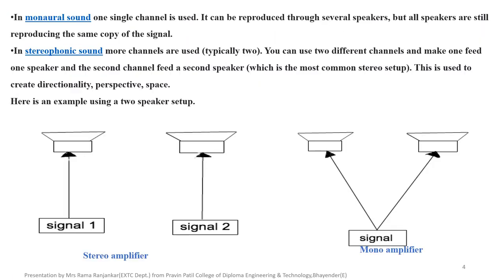In monaural sound, one signal and a single channel is used. It can be produced through several speakers, but all the speakers are still producing the same copy of the signal. In stereophonic sound, more channels are used. You can use two different channels and make one feed one speaker and a second channel feed a second speaker, creating directionality and space.